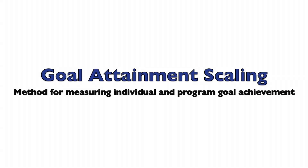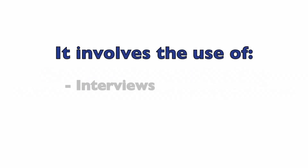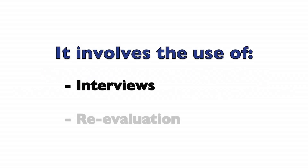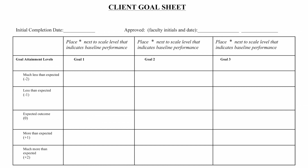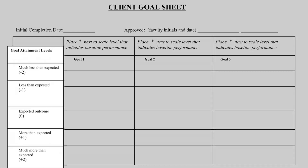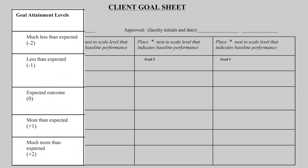Goal attainment scaling is a method for measuring individual and program goal achievement. It involves the use of interviews during goal setting and reevaluation to determine progress. Unlike typical goal setting, in which an individual sets a goal that is either met or unmet, goal attainment scaling allows the individual to envision a full range of possible outcomes, from much less than expected to much more than expected. The goal attainment scale provides a structured framework for identifying these specific goal behaviors using a five-point scale of plus two to minus two.